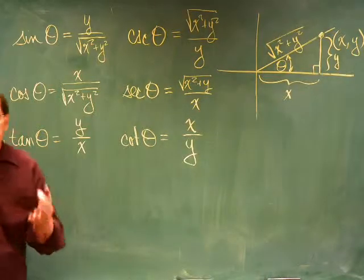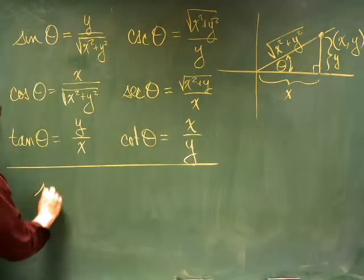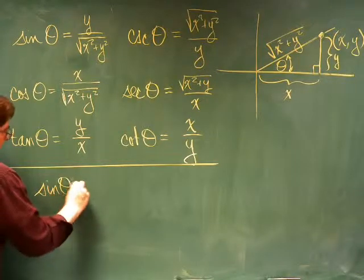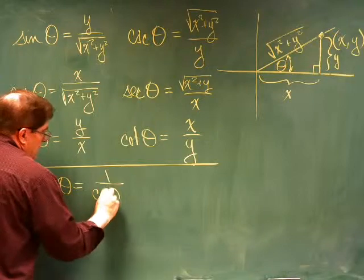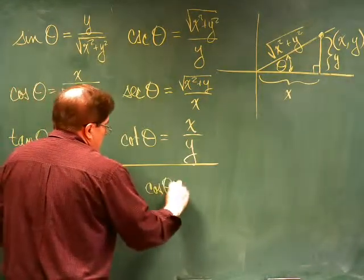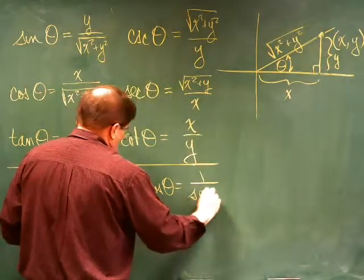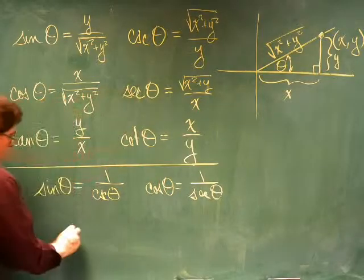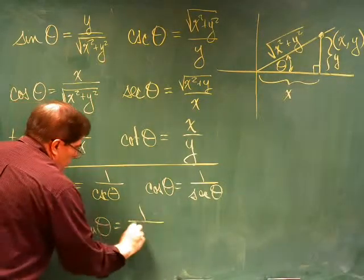These trig identities are called the reciprocal identities. That is, the sine of theta is equal to one over the cosecant of theta. The cosecant of theta equals one over sine of theta. And the tangent of theta is equal to one over the cotangent of theta.